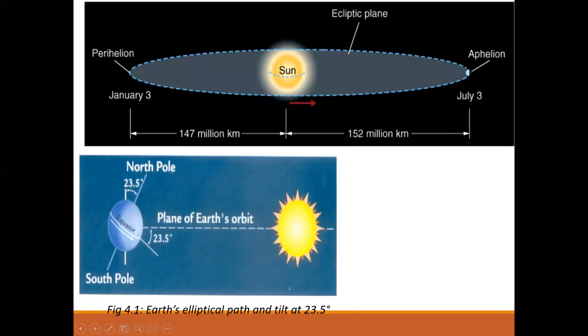We know that the Earth revolves about the sun along an ecliptic plane. Total variation can be up to three percent using the inverse square law, so radiation intensity varies by about seven percent between the perihelion and aphelion. Looking at the ecliptic plane, we see that January 3rd and July 3rd describe the perihelion and aphelion in relation to the position of the sun.